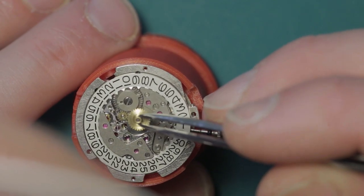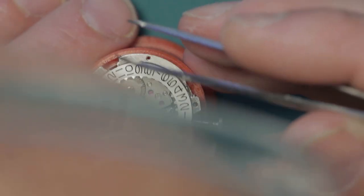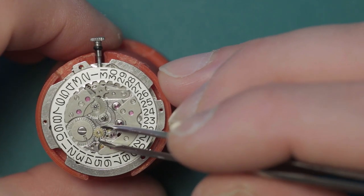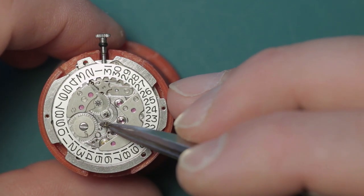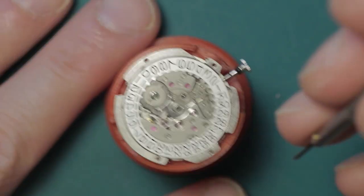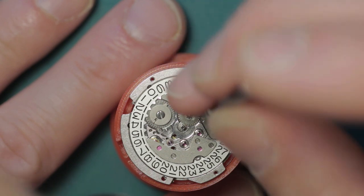Right at this point I'm just going to remove the hour wheel, get that out of the way. Assuming that also the intermediate driving wheel for the calendar will lift off - and it does, yeah.